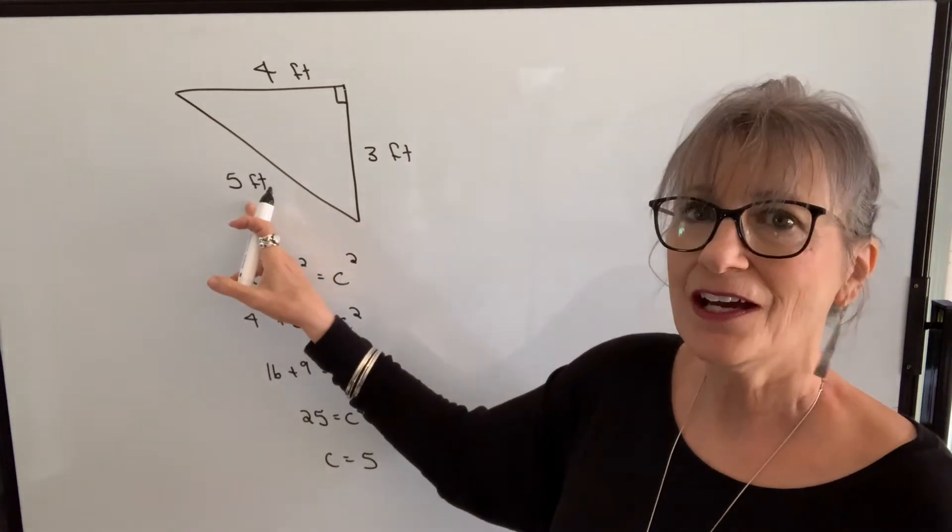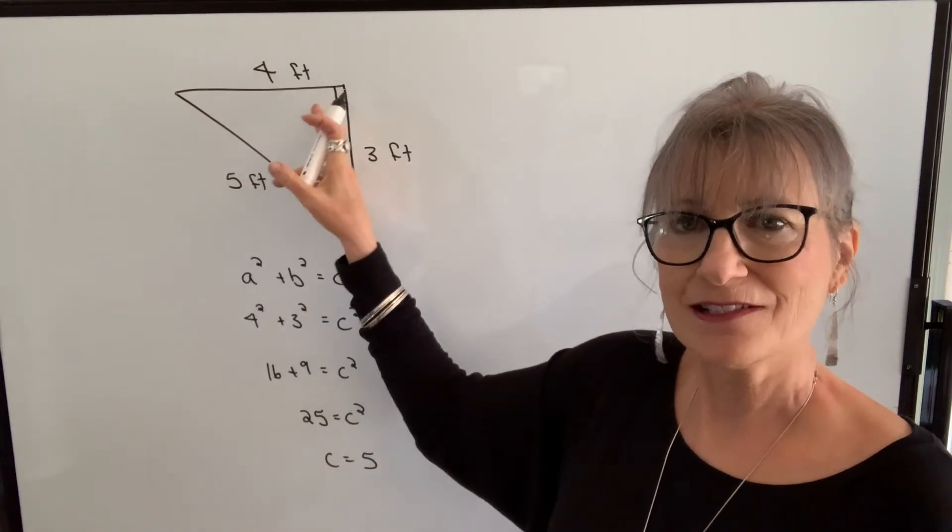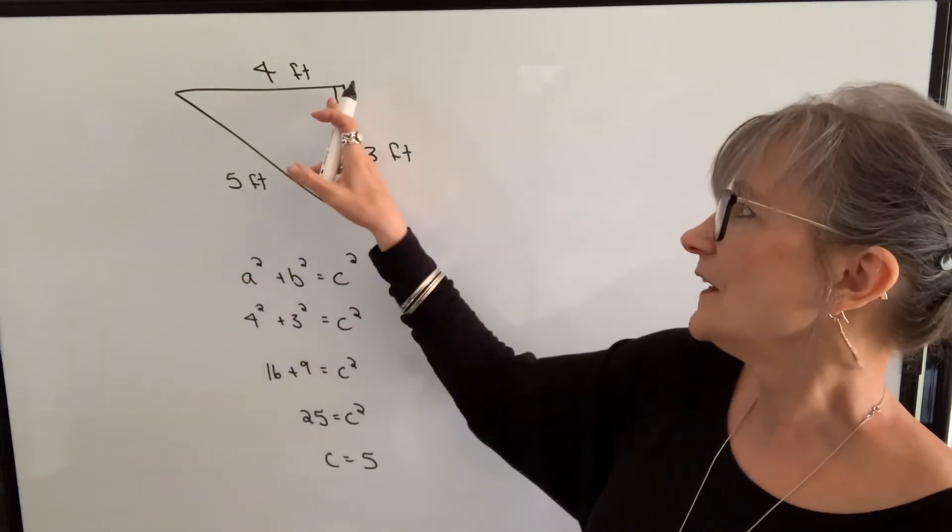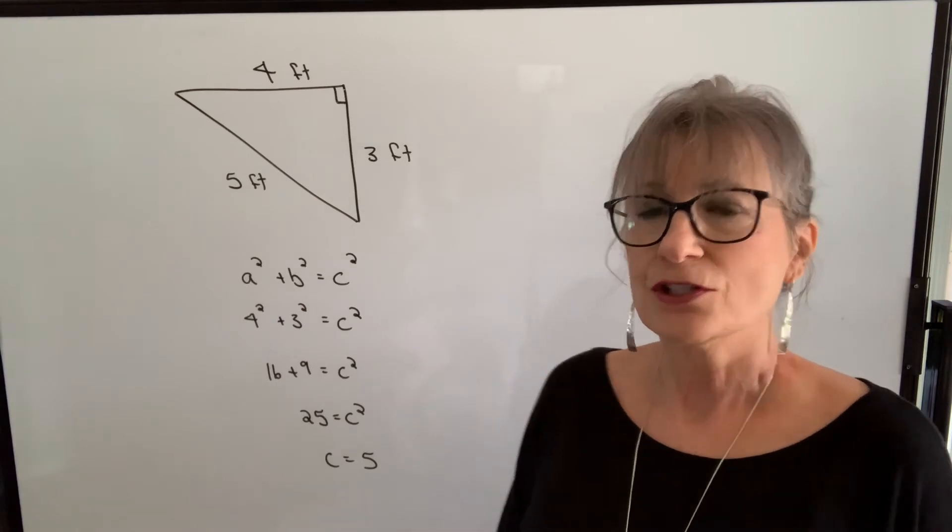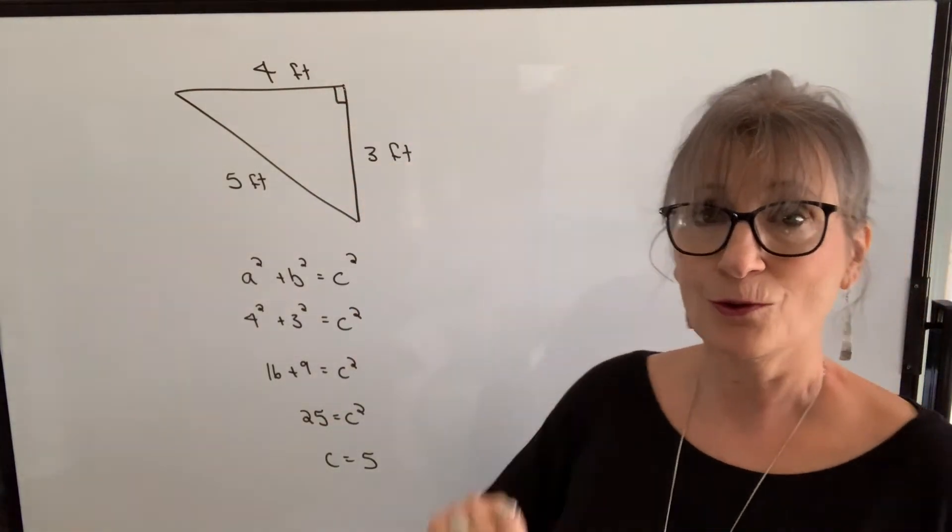If it's less than 5, the angle is less than 90 degrees. If this length is greater than 5, then the angle is greater than 90 degrees. So it helps you determine whether you have a square or a right angle corner.